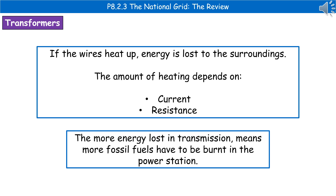When electricity is being transmitted through the National Grid, if the wires heat up we lose energy to the surroundings. The amount of heating depends on the current and the resistance. The more energy we lose in transmission, the more fossil fuels we have to burn to make up that lost energy for the homes that still need the same amount.